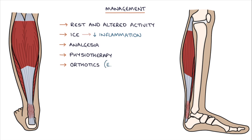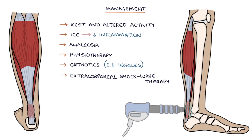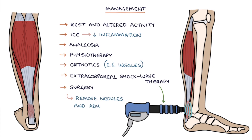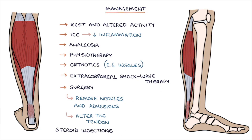Orthotics may be useful, for example insoles in the shoes to take pressure off the Achilles. Extracorporeal shockwave therapy (ESWT) may also be helpful. Surgery may be used where other treatments fail to remove nodules and adhesions or alter the tendon. Steroid injections into the Achilles tendon are avoided due to the risk of tendon rupture.